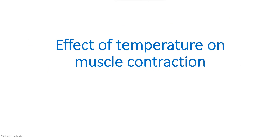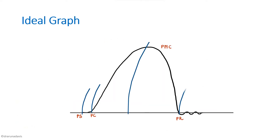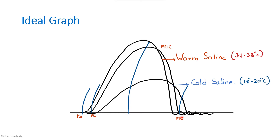The next experiment is the effect of temperature on muscle contraction. We use a Lucas trough, filled with warm or cold saline, and immerse the nerve muscle preparation into it, then take recordings using the lever. Drawing the graph: first draw the simple muscle curve, then pour warm saline — around 37 to 38 degrees Celsius. The latent period decreases, contraction period and relaxation period decrease, and amplitude increases. When replaced with cold saline, the latent period increases, amplitude decreases, and contraction and relaxation periods increase.